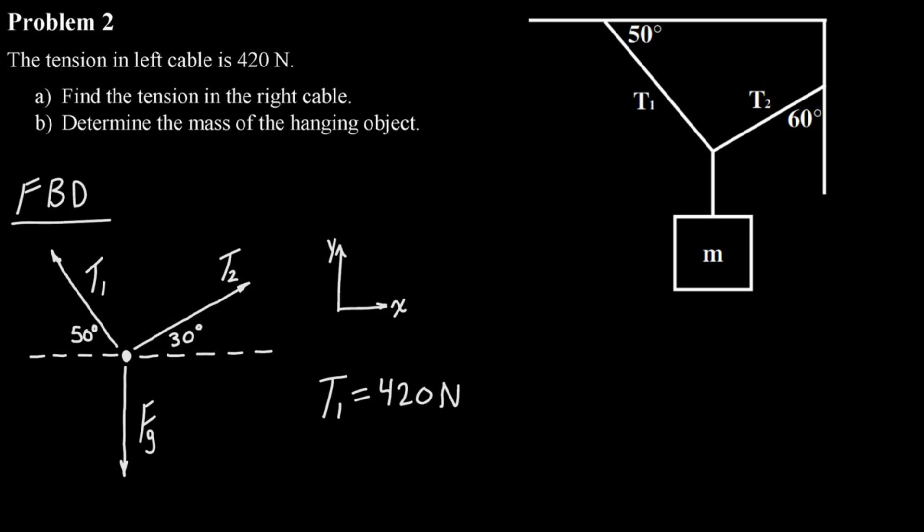And then we've got T1 which is going up and to the left, and then T2 which is going up and to the right. Now those angles that they gave us, the 50 and 60 degrees, are not really the angles that we want. What we need is the angle between the tension forces and either the horizontal or the vertical. So what I've done for both the tension forces is found the angle between them and the horizontal, just to make our equations a little more consistent.